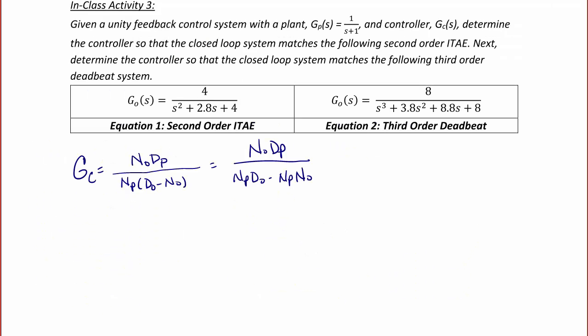Now let's see an example of model matching. In class activity 3, given a unity feedback control system with a plant Gp(s) equal to 1 over (s plus 1) and a controller Gc(s), determine the controller so that the closed-loop system matches the following second-order ITAE.